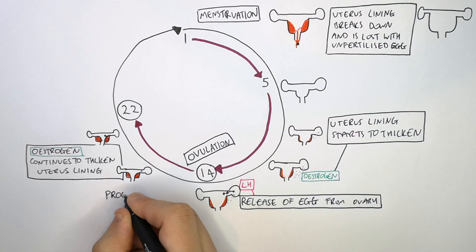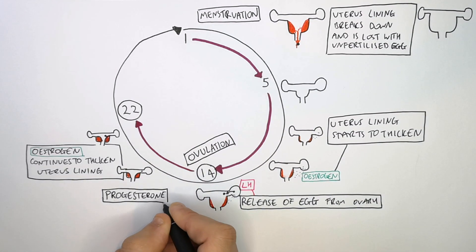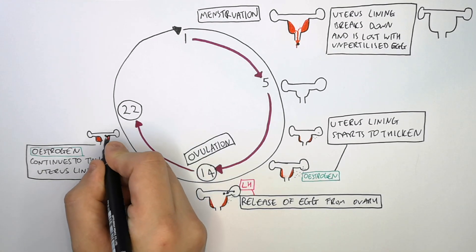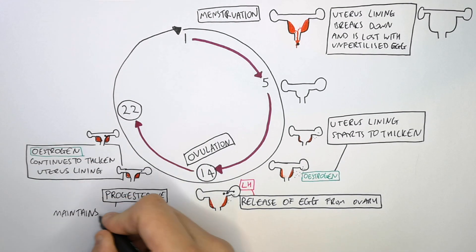And another hormone is then produced, that is progesterone. Progesterone maintains the uterus lining. It maintains the thickness.